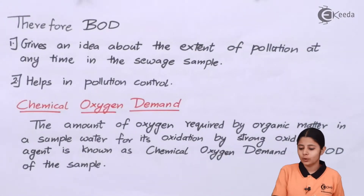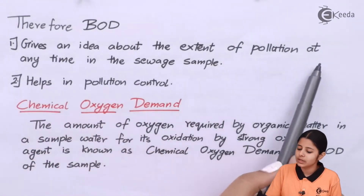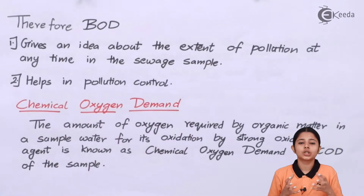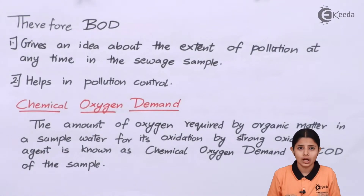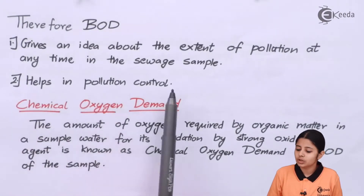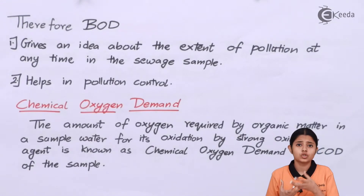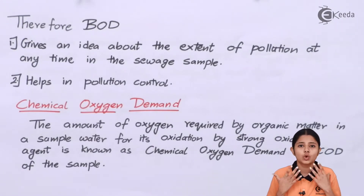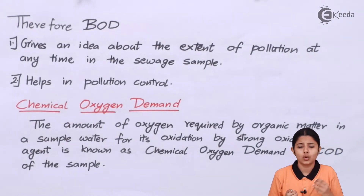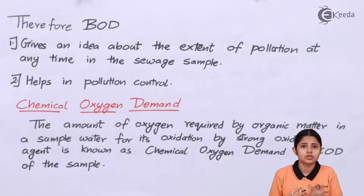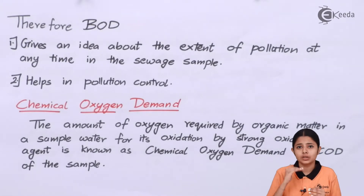Uses of BOD: First, BOD gives an idea about the extent of pollution at any time in a sewage sample — we take the sample, keep it for five days, calculate the reduction in oxygen, and find the BOD and level of pollution. Second, it helps in pollution control. If a certain industry's waste has a very high BOD, we can ask them to put up a filtration plant, which will reduce the BOD so that waste going into fresh water rivers or the sea will consume less oxygen from those water bodies.